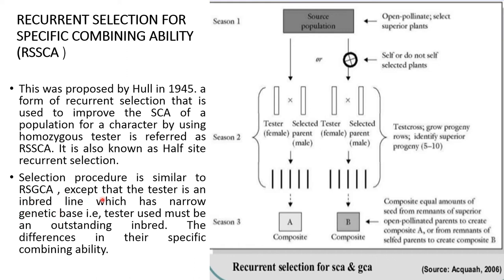In the case of general combining ability, a heterozygous tester with a broad genetic base is used. Whereas in specific combining ability, the tester used must be an outstanding inbred line. This is the key difference between general combining ability and specific combining ability.